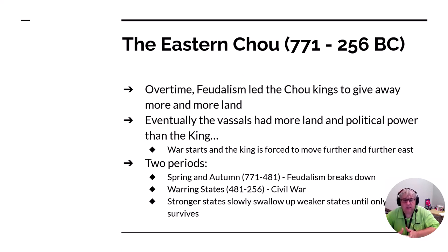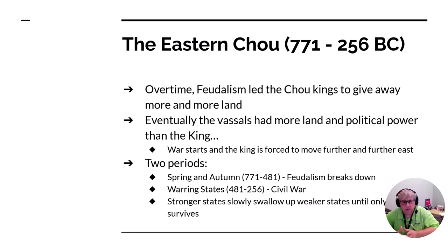During the Spring and Autumn period, feudalism breaks down and some vassals start to challenge the king, forcing him to move further and further east. Eventually by 481 BC, the feudalism system completely breaks down and there is open rebellion against the Zhou kings. Several dozen states develop and fight each other, and by 256 BC, one state survives and claims the throne of ancient China.